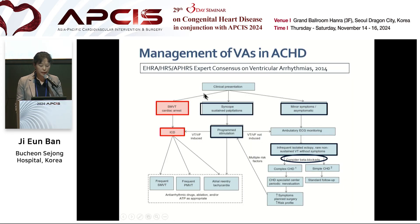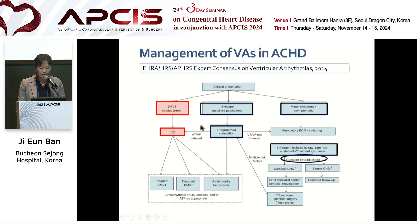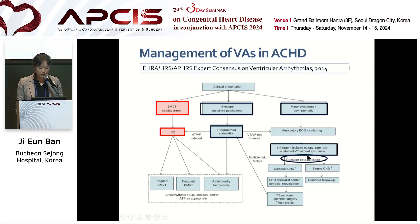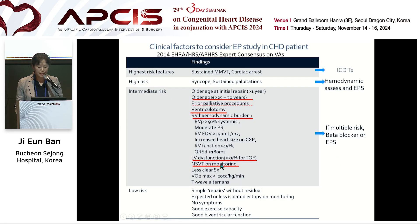This algorithm shows management of ventricular arrhythmia in adult congenital heart disease. If clinical presentation is sustained monomorphic VT or cardiac arrest, ICD implantation is indicated. If the patient experiences syncope and sustained palpitation, EP study is recommended. If the patient has PVCs or non-sustained VT with minor symptoms, beta blocker can be considered. This table shows clinical factors to consider for EP study. If the patient has multiple risk factors, beta blocker or EP study is considered.